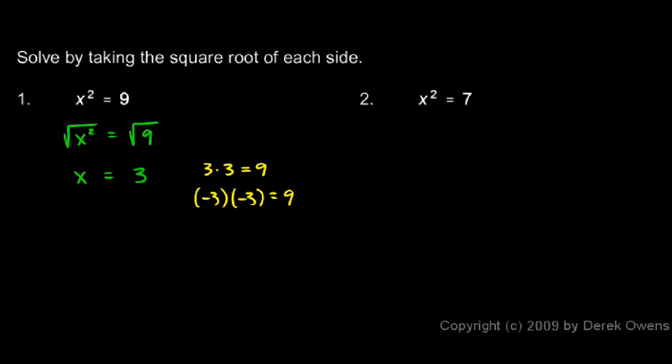So negative 3 is also the square root of 9. So I can write 3 as an answer or negative 3 as an answer, and I really should put both. And I put both by putting a plus or minus sign right here in front of the 3.